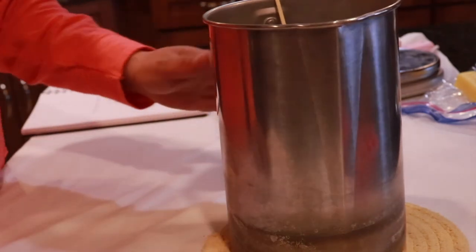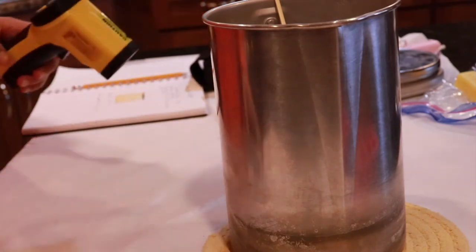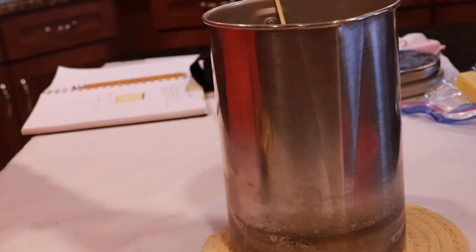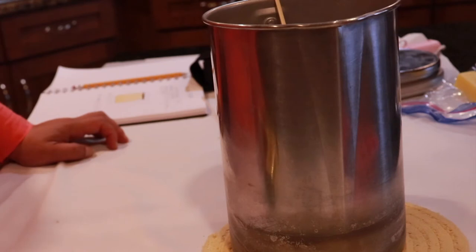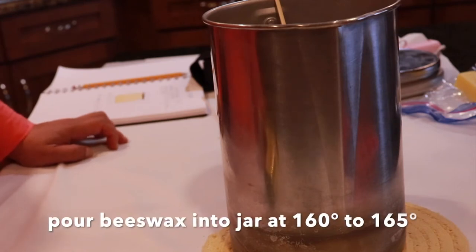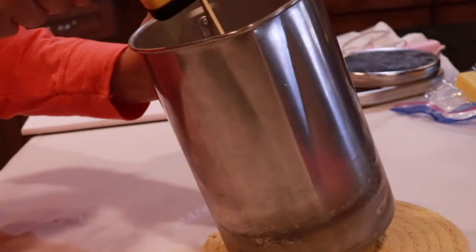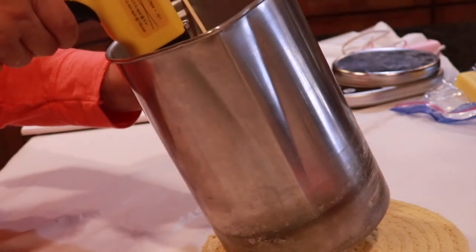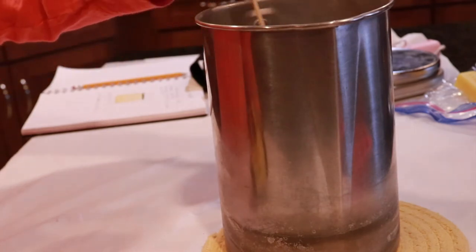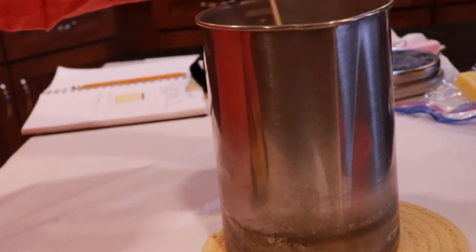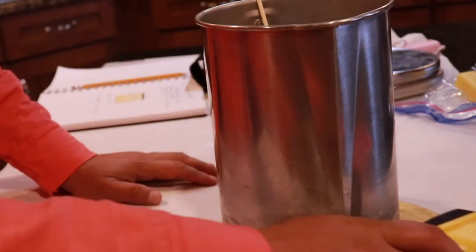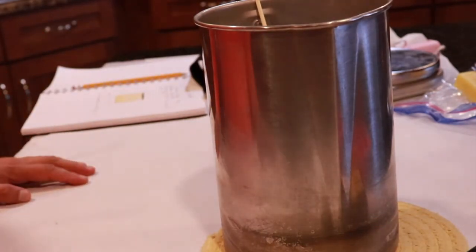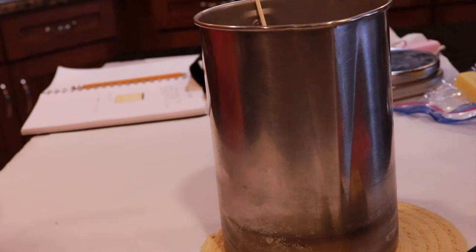We have melted the wax and it is recommended that when you pour beeswax, you pour it at 160 to 165 degrees Fahrenheit. Right now we are at 190, so I'm just going to let it cool. While we're letting it cool, I'm going to prep the container. Let me take it out of the oven. It's been sitting in the oven at 200 degrees this whole time.